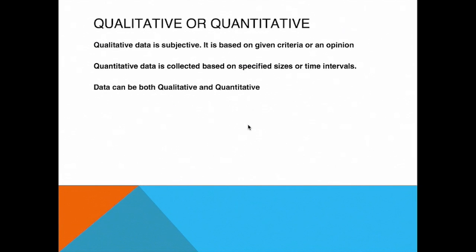Qualitative or quantitative. Qualitative data is subjective. It's based on given criteria or an opinion. This opinion can, of course, come from an expert or it can be some sort of specifications that the data must meet. Quantitative data is collected based on specific sizes or time intervals.